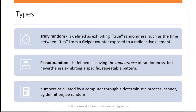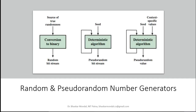Numbers calculated by a computer through a deterministic process cannot by definition be truly random. If you have a deterministic process — like a random number generation function that takes some initial value to start — then it is a deterministic process and its output cannot be called truly random. Here you can see three kinds of random number generators. First: a source of true randomness with conversion to binary gives a true random bitstream. For example, putting a microphone on the roadside, recording noise, and quantifying it into a bitstream — that will be a true random bitstream.